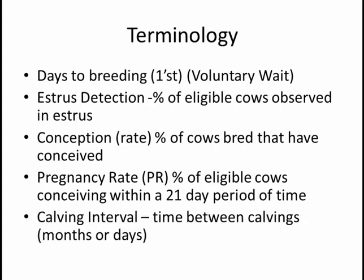Calving interval is the interval between calvings and this is often presented in terms of months or days, so it's from one calving interval event to a consecutive calving interval event for a cow.